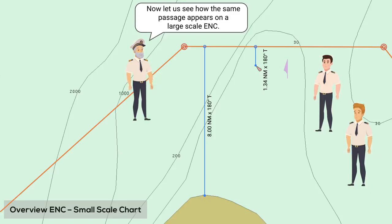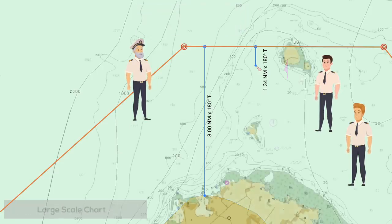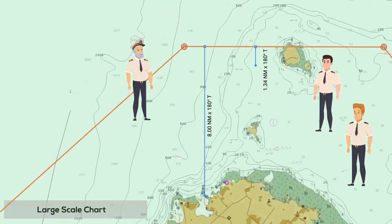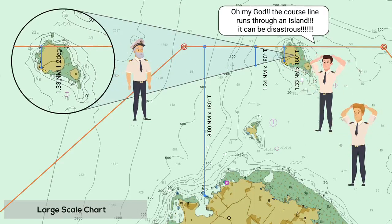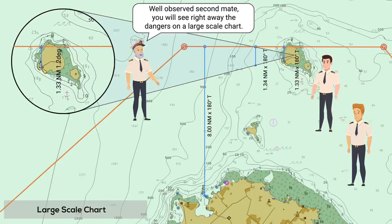Now, let us see how the same passage appears on a large-scale ENC. Oh my God! The coastline runs through an island. It can be disastrous. Well observed, second mate. You will see right away the dangers on a large-scale chart.